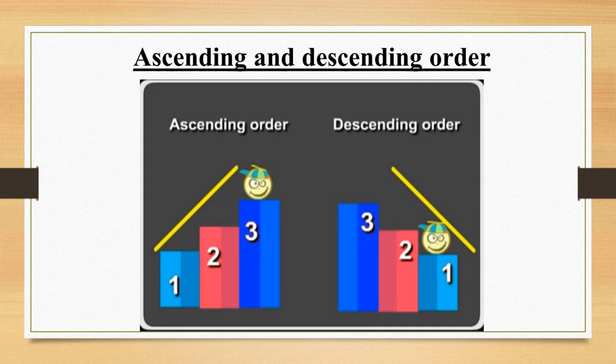Ascending order means the numbers which start from smaller to bigger — for example, 1, 2, 3, 4, 5, 6, and so on. And what about descending order? Descending order means the numbers which start from bigger to smaller — for example, 6, 5, 4, 3, 2, 1.